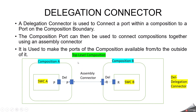Delegation connector. You can see this example. We have a top-level composition. Inside the top-level composition, we have two compositions — composition A and composition B. Inside composition A, we have one software component called software component A. Inside composition B, we have software component B. If you want to make a communication between software component A and software component B, then you need to make an outer port, and to make an outer port we will use the delegation connector.